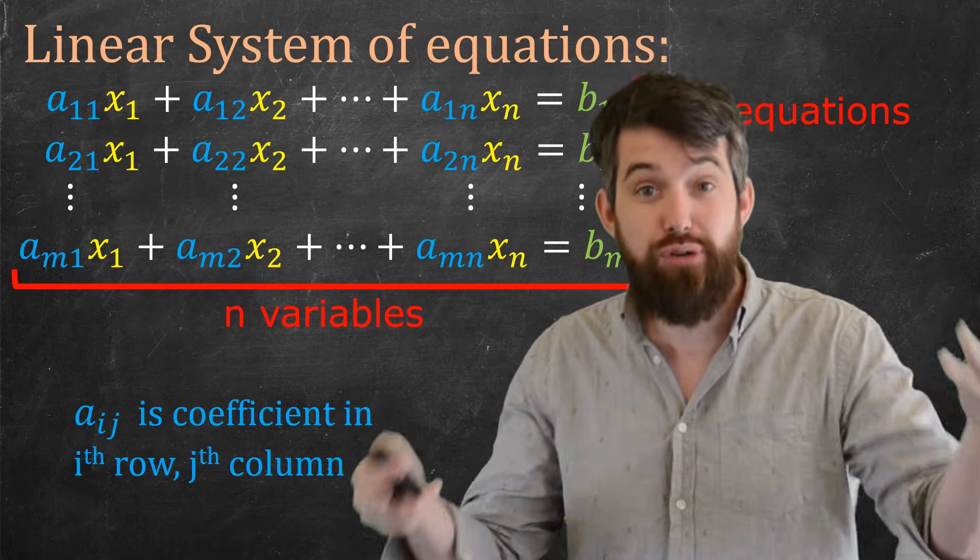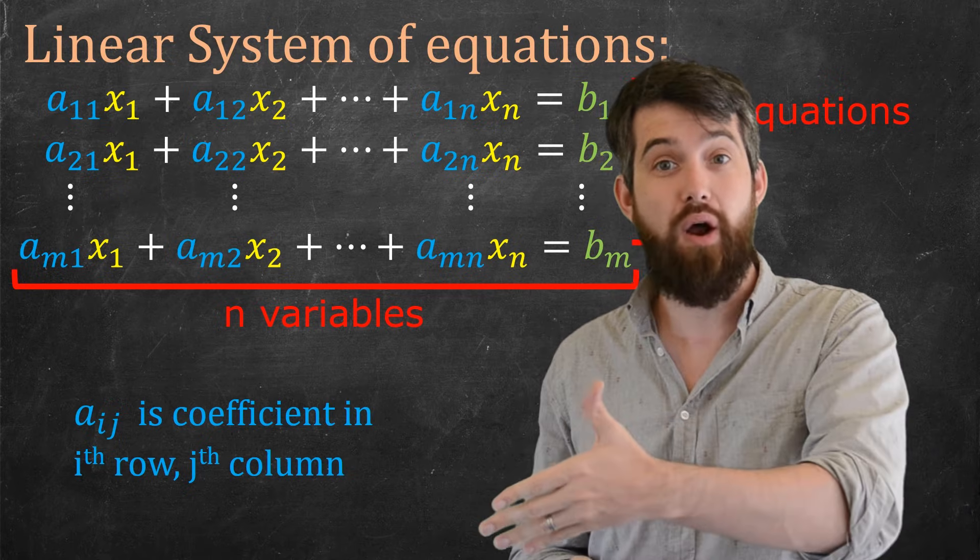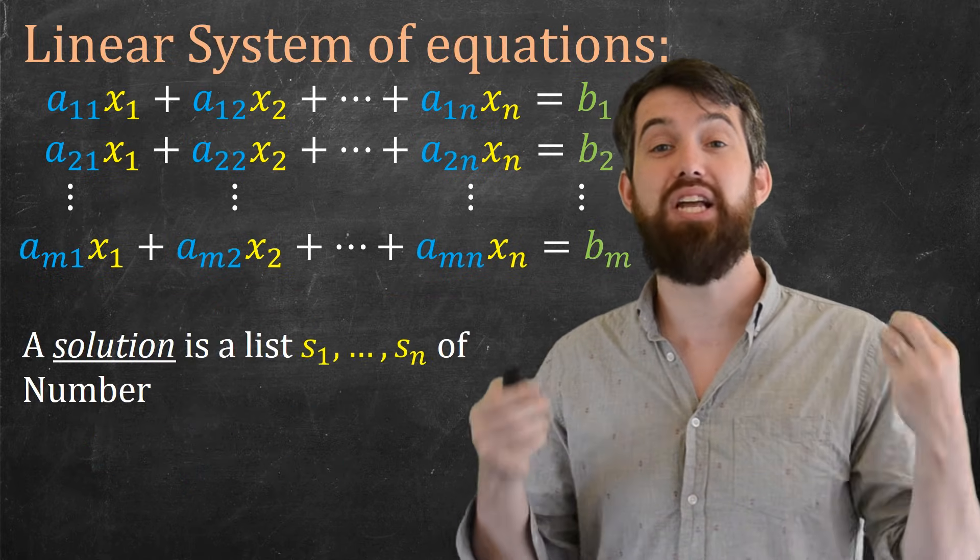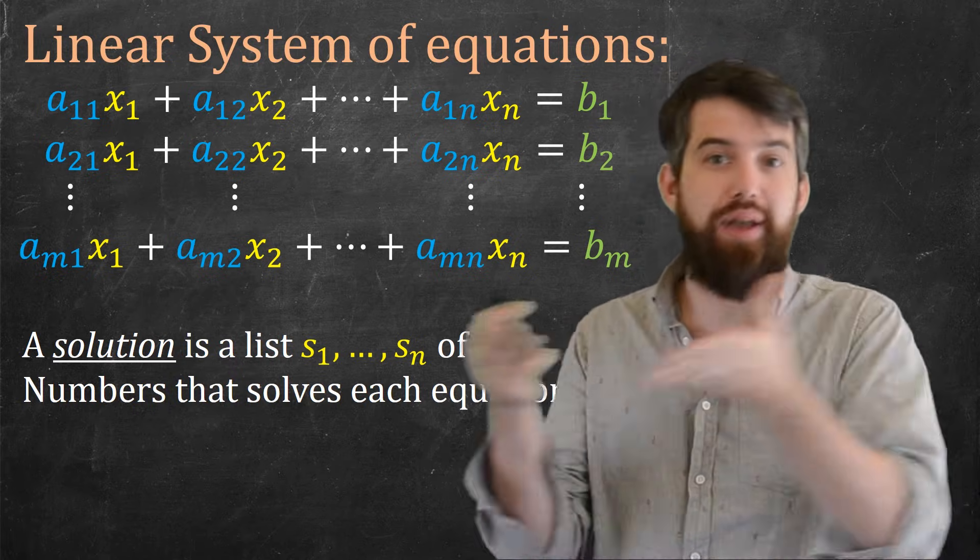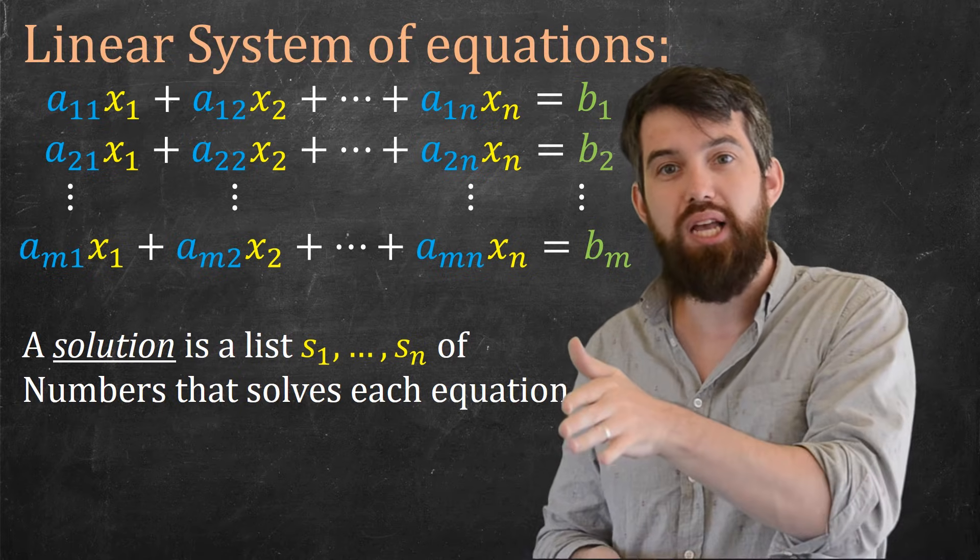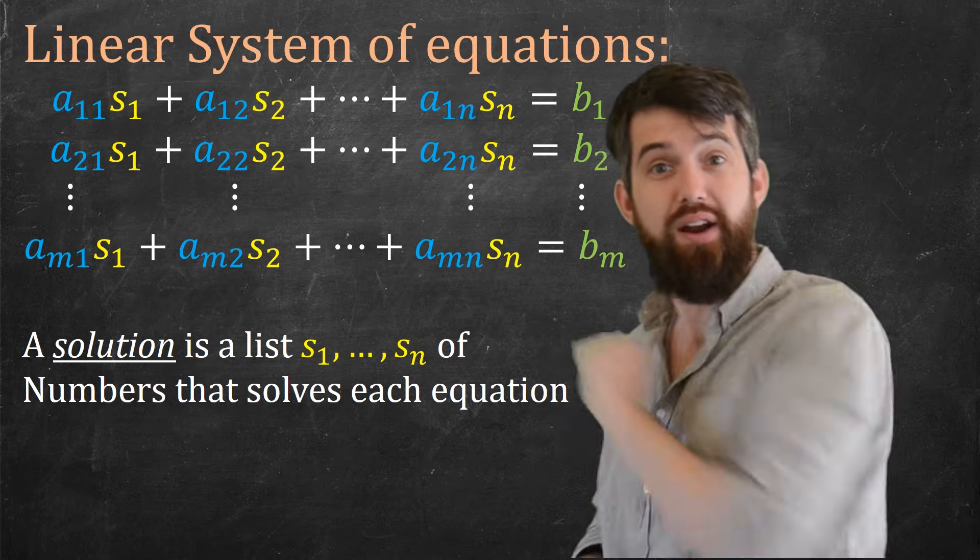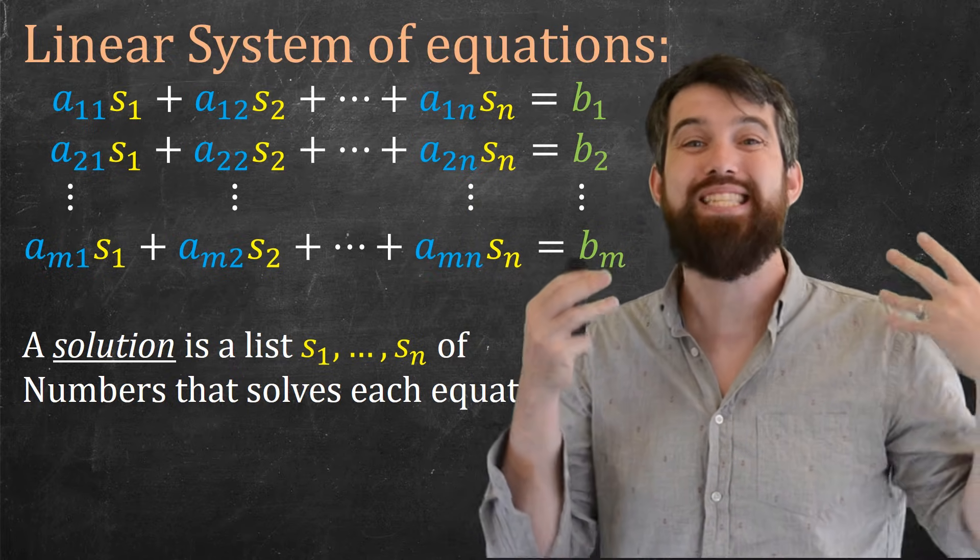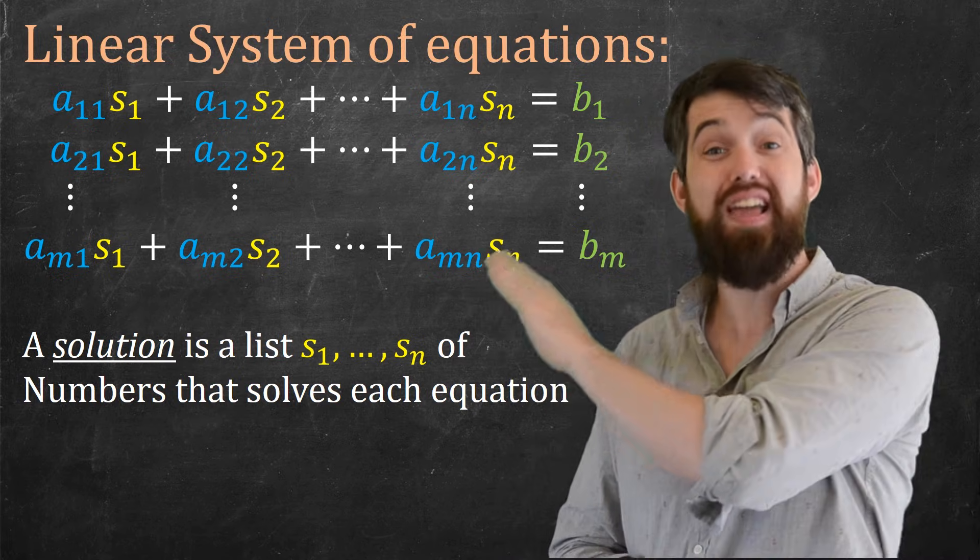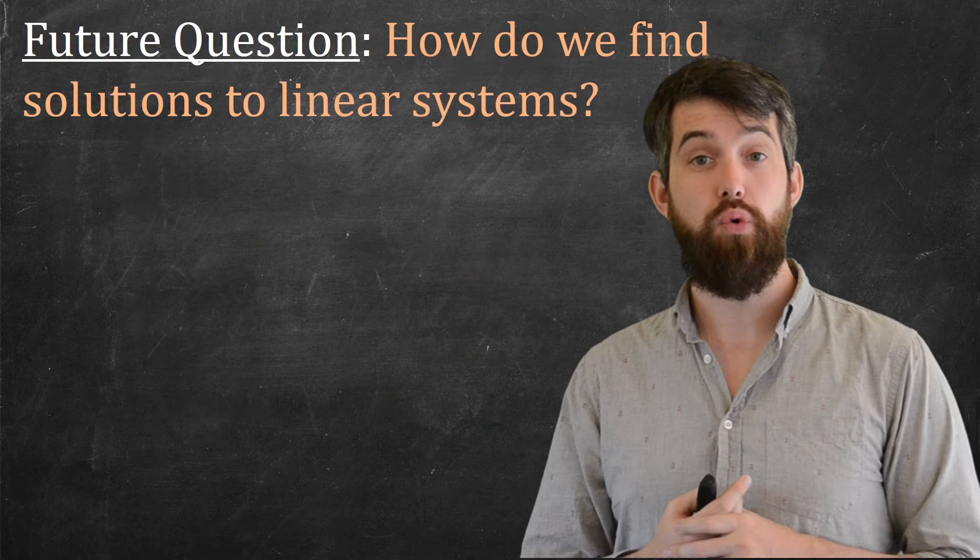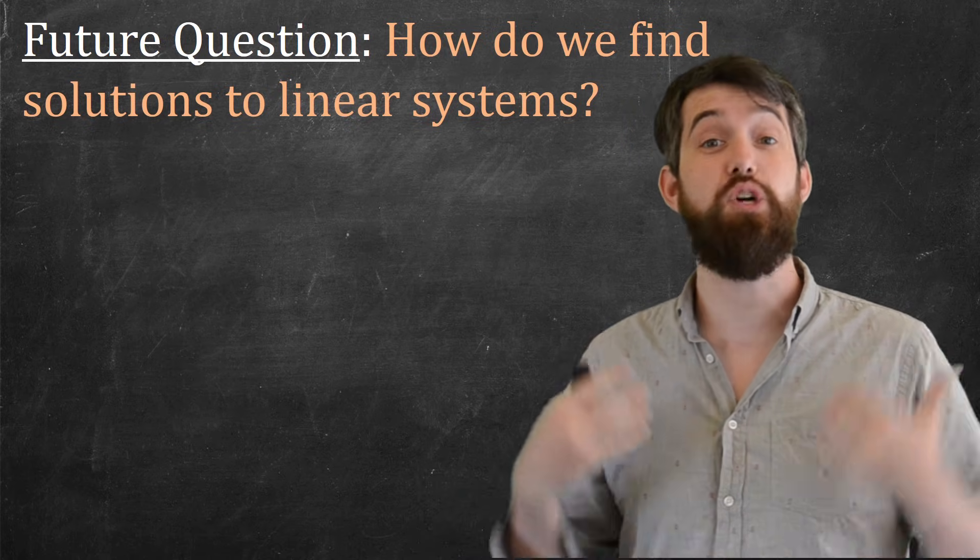Alright, so what is a solution to this linear system? Well, I have to tell you what the x1 down to the xn are. That is, a solution is going to be a list of numbers, an s1 down to the sn, for solution, corresponding to the x1 down to the xn, the variables. A list of numbers where if I take those numbers and then everywhere there's an x, I'm going to put them in there and now I have everything in terms of my specific values, my solutions, my s1 down to the sn. It has to satisfy every single equation.